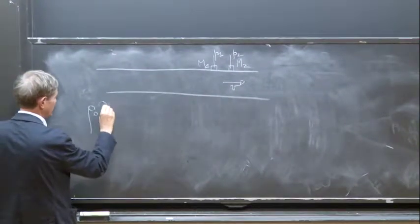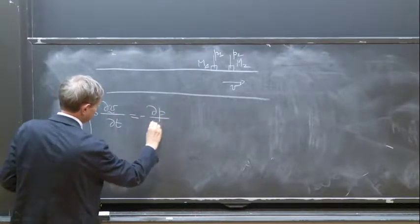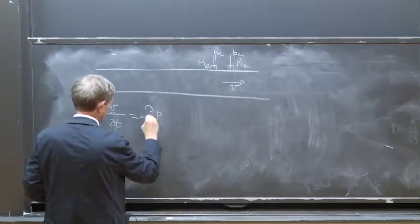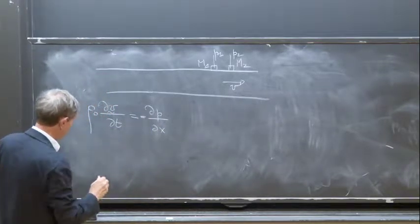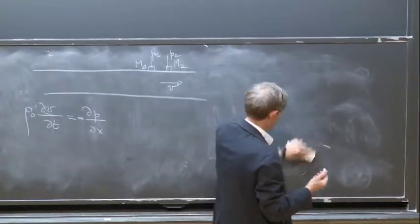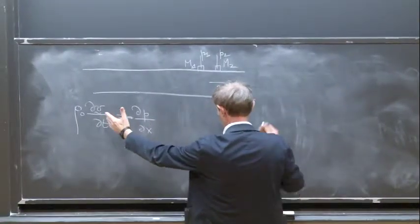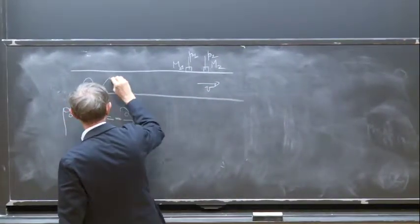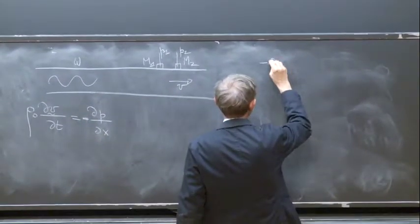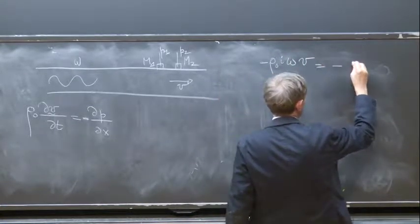We use the momentum equation for that, which is minus dP by dx. This is one-dimensional, so it's minus dP by dx. The idea is as follows: at a given frequency omega, we know that minus rho0 times i omega times V is equal to minus dP by dx.